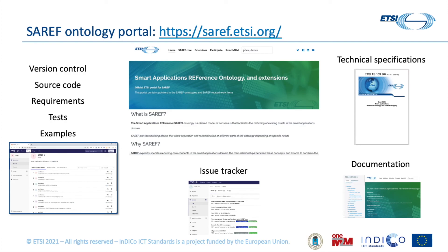In the Forge, we have the version control system that collects all the artifacts of the SAREF ontology development and its extensions — the source code, the requirements of the ontology, the different tests being performed, and examples of use. Finally, it also contains the issue tracker, which is the main communication point with the community where people can introduce their change requests, either for correcting defects in the ontology, in the documentation, or in any of the artifacts, or even to propose a new extension for SAREF.